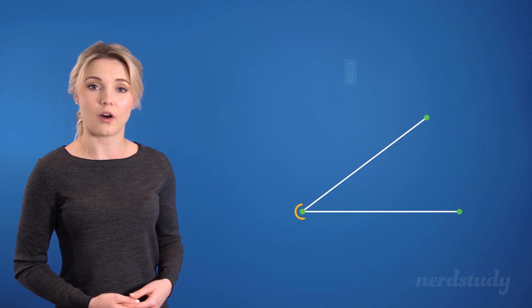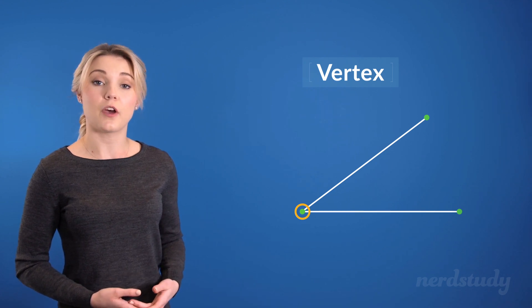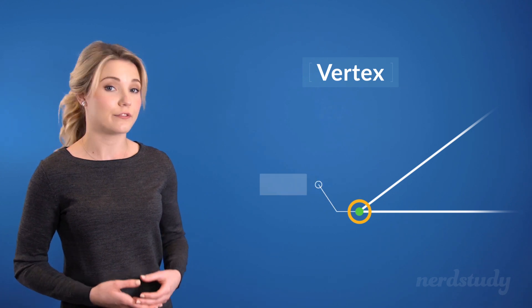Now, lines, rays, or line segments can come together to form something called a vertex. In this case, as we can see, we've got two line segments that come together at this point, or shall I say this vertex.